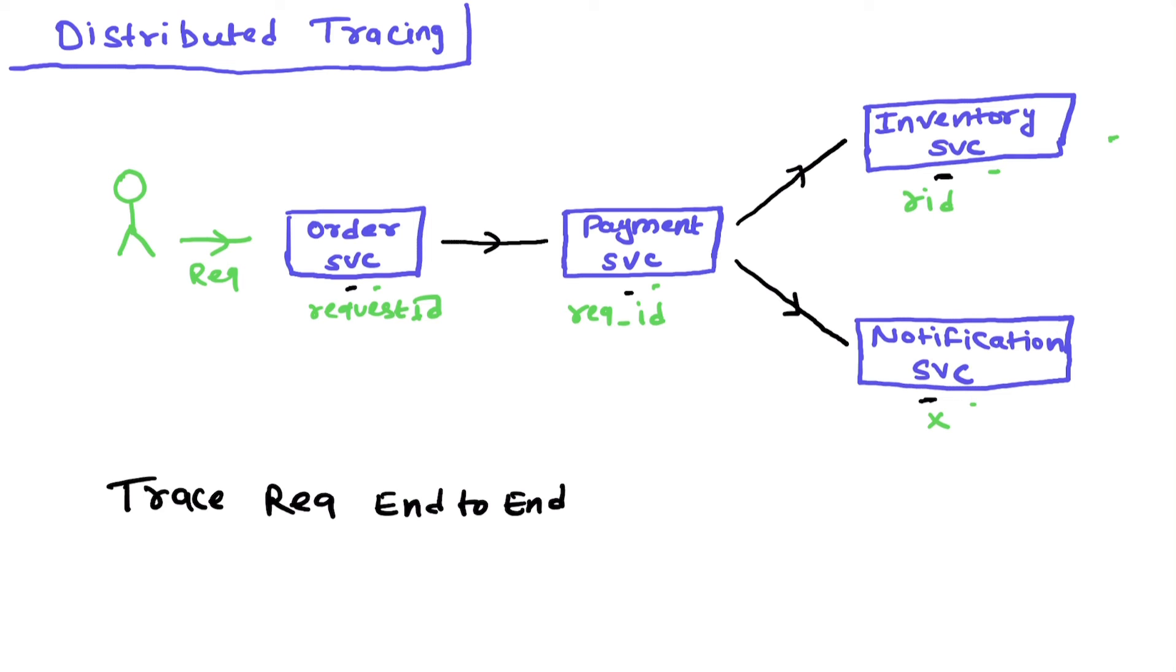That is the challenge within this type of microservice architecture—you cannot correlate your logs if every system, every module logs in their own way. Now distributed tracing solves this problem. Distributed tracing creates a trace for that request starting from the point when the user sent the request. It gets a trace ID.